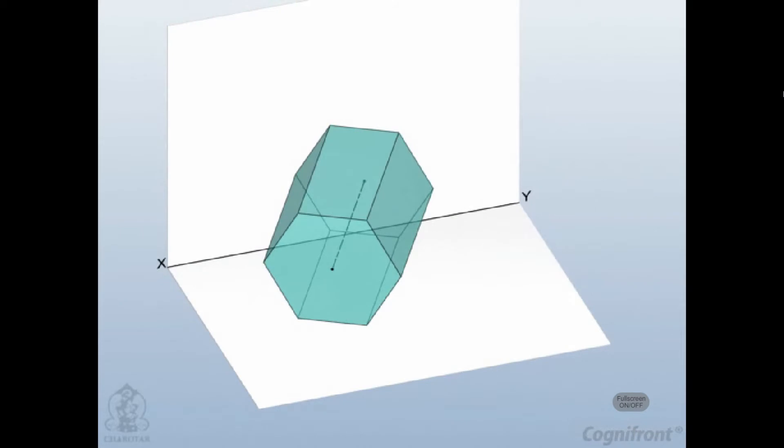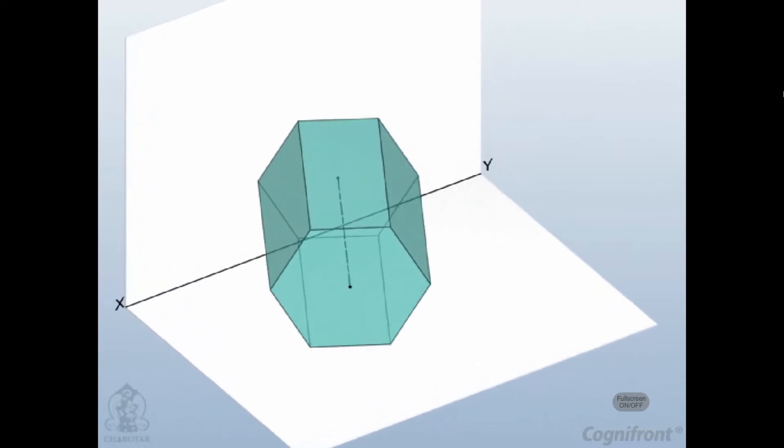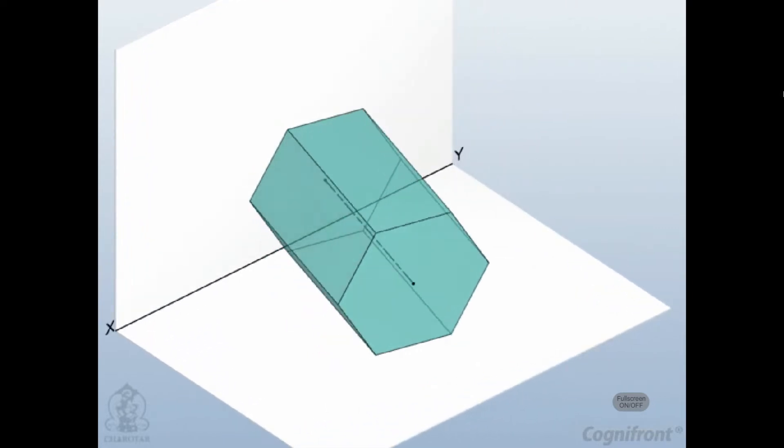To solve such problems, alteration of position method is used. In that, initially the axis of the solid is assumed to be perpendicular to one of the planes. Then, view showing its true shape and size is drawn.